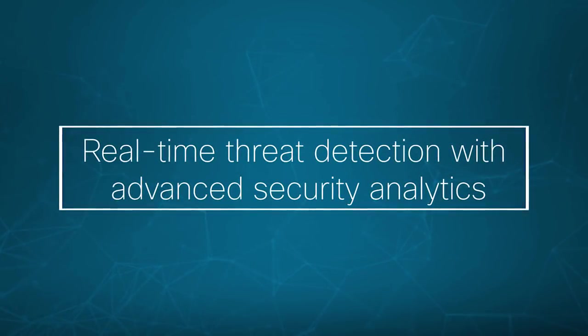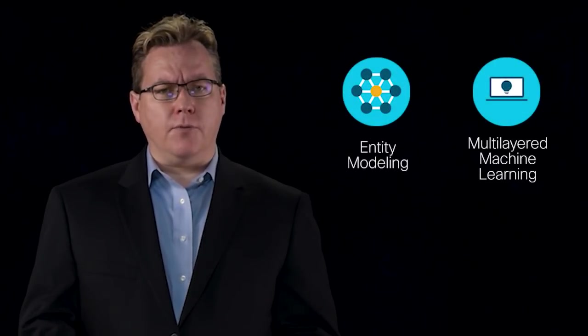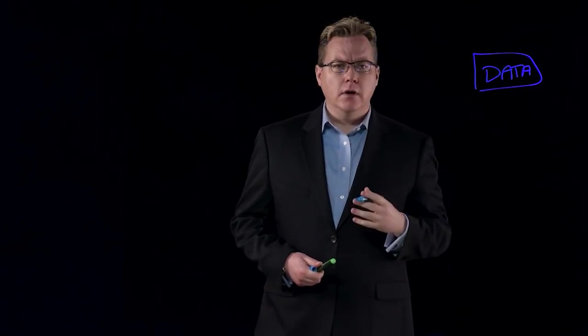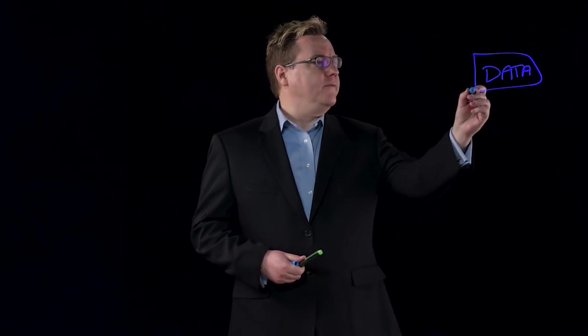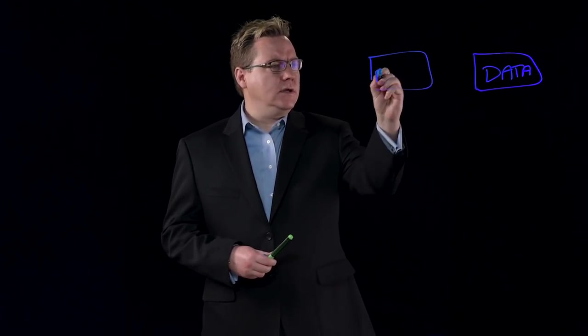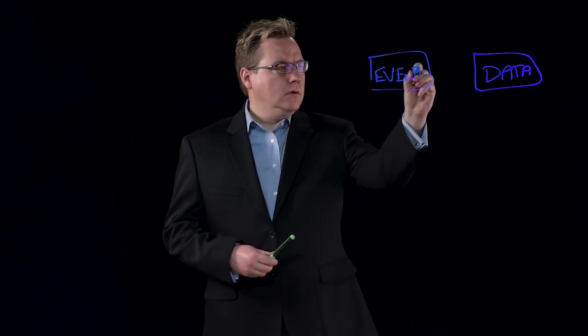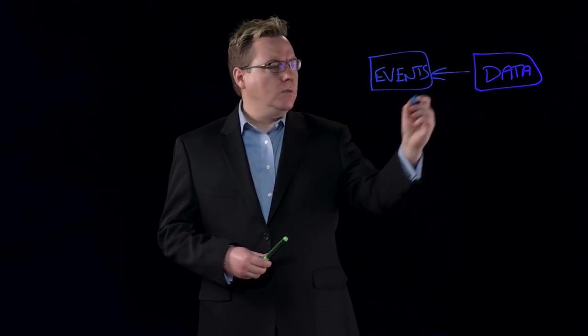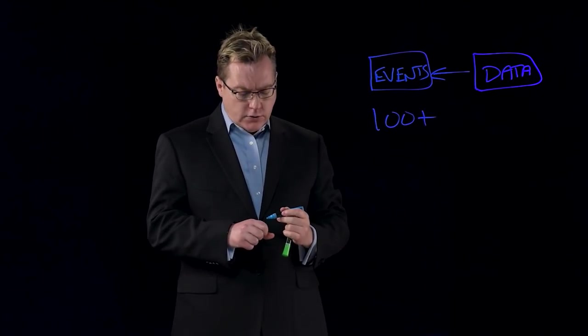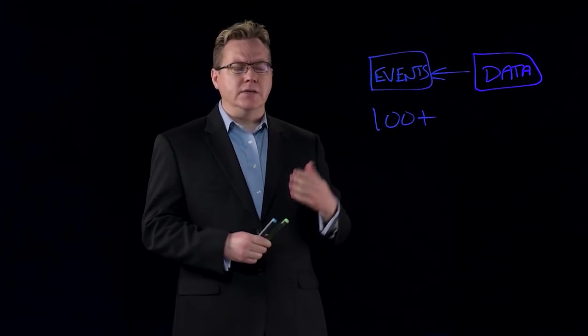So in this section we'll be talking about Stealthwatch Enterprise and how it uses entity modeling and machine learning to detect threats both in normal and encrypted traffic. So as we said earlier we've collected a comprehensive data set from all our data exporters and from all the various telemetry sources on our network. Now we really need to convert this into events. So how do we do this? Well we have more than 100 heuristics that run on our data set to convert it into meaningful events in the network.